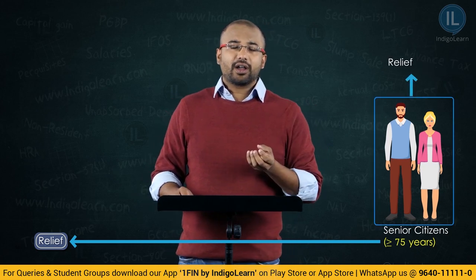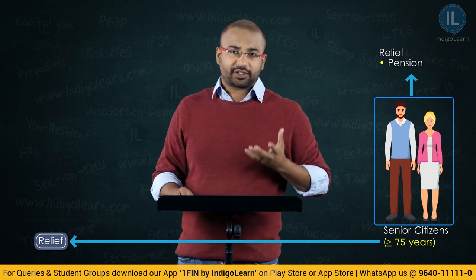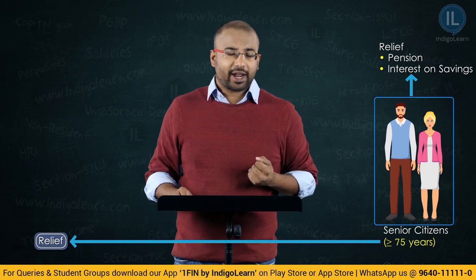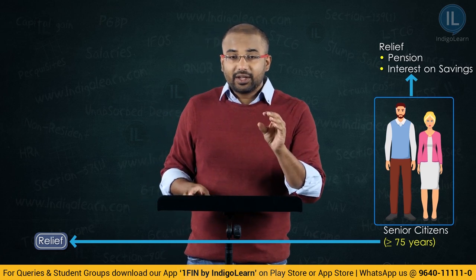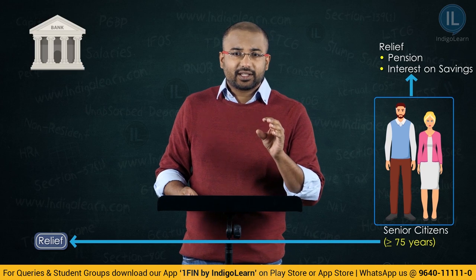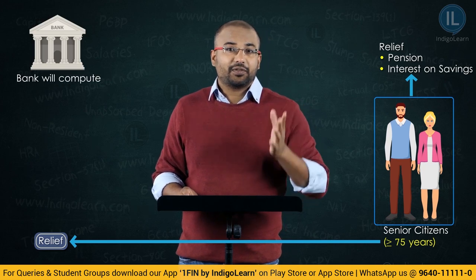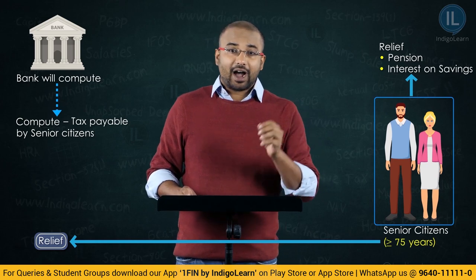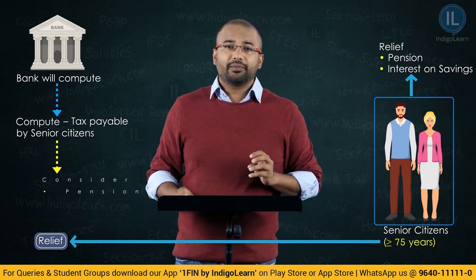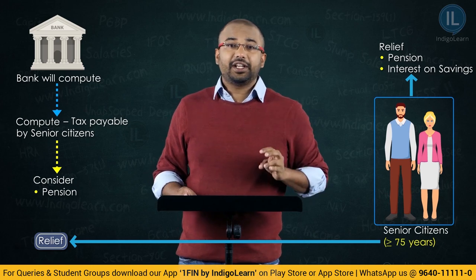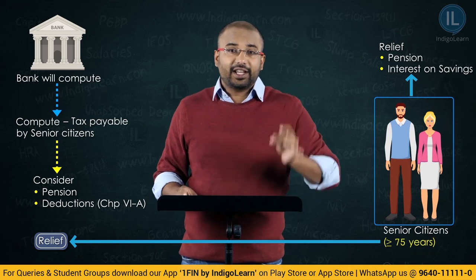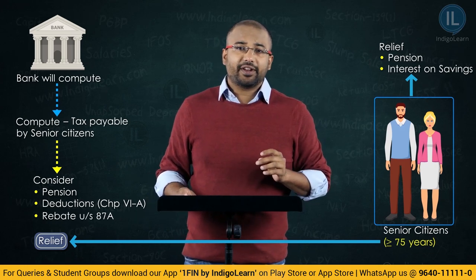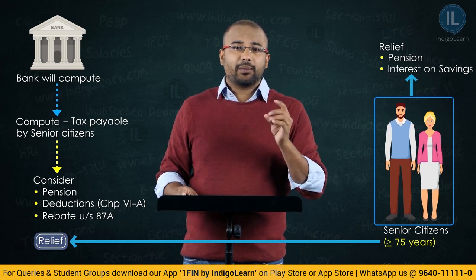This relief is for senior citizens who have only income from pension or income in the form of interest from their savings in the bank. The section says that the bank will deduct TDS — not only on the interest at a specified rate — but will actually calculate what is the tax payable by the senior citizen, after considering pension income, deductions under Chapter 6A, and the rebate under Section 87A, then deduct that tax.